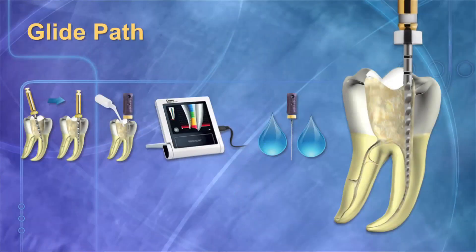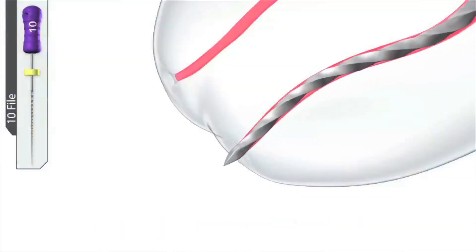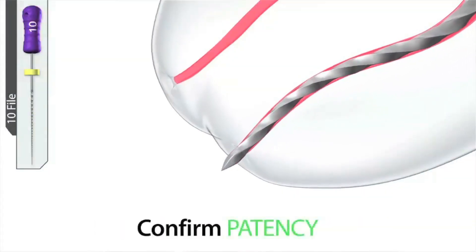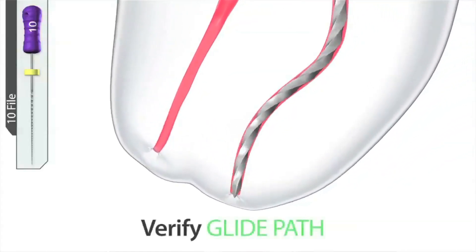Before we start working with any endodontic file, we must create a glide path. The glide path is the road map for files to follow. We are going to show all the files what that road map is that they need to follow.